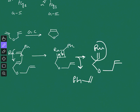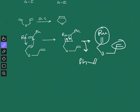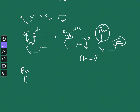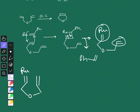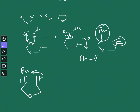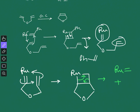Now this part and the remaining alkene part can undergo another 2+2 cycloaddition reaction to form another metallacycle. This metallacycle collapses in the same way — one bond comes here, the other goes here — and you obtain the ring-closed product.